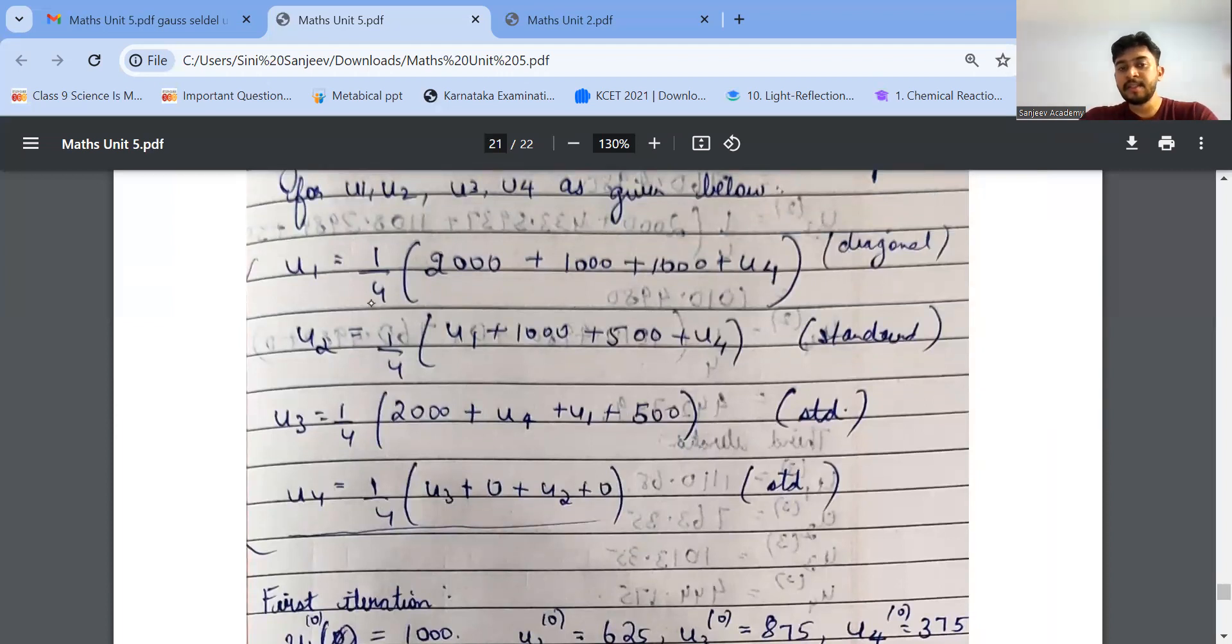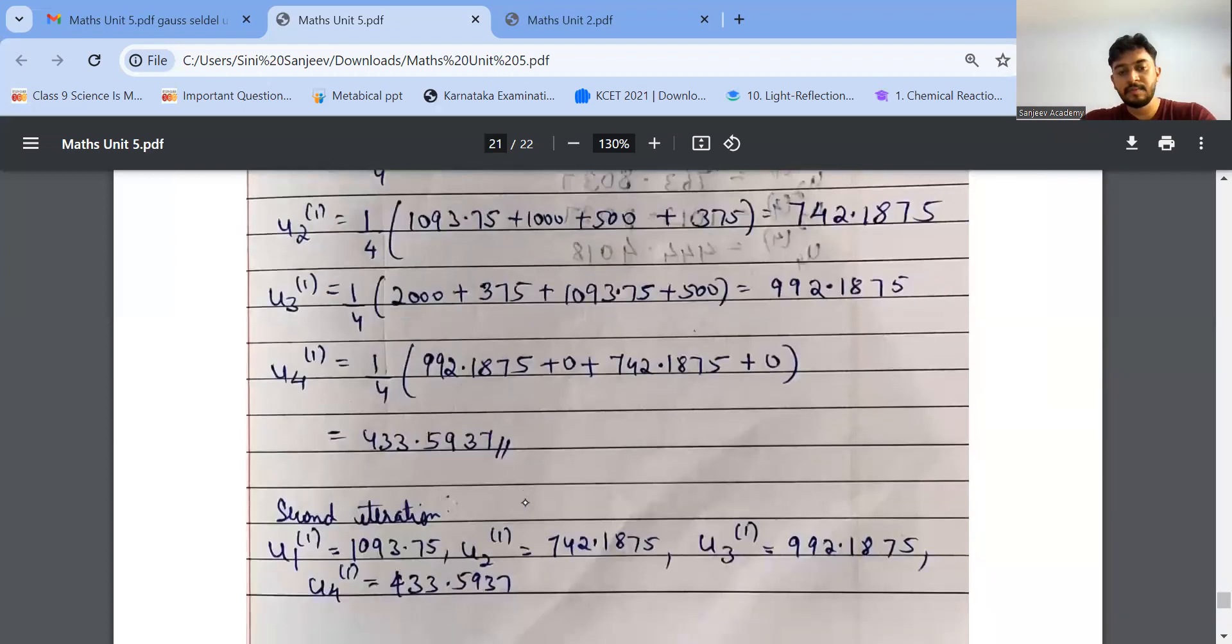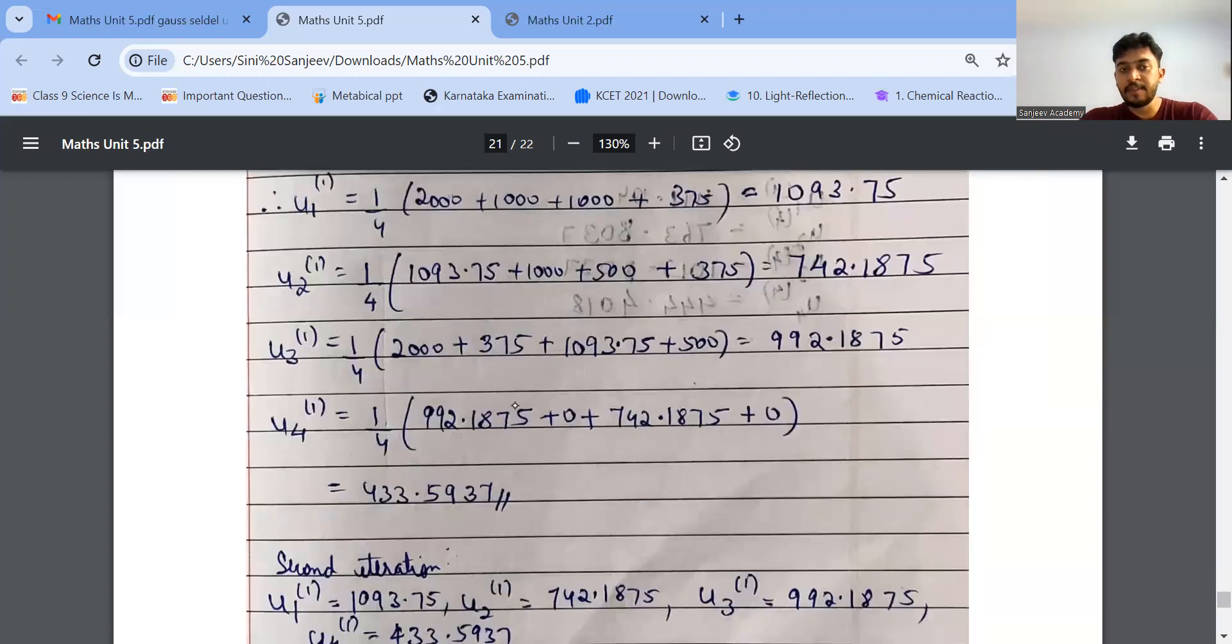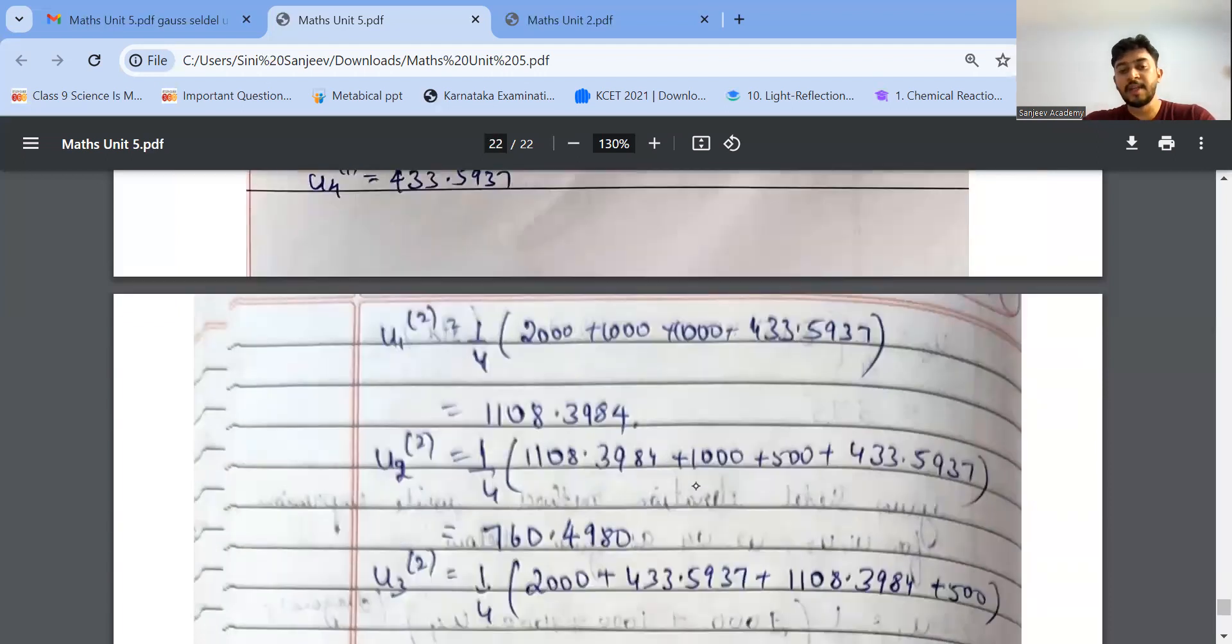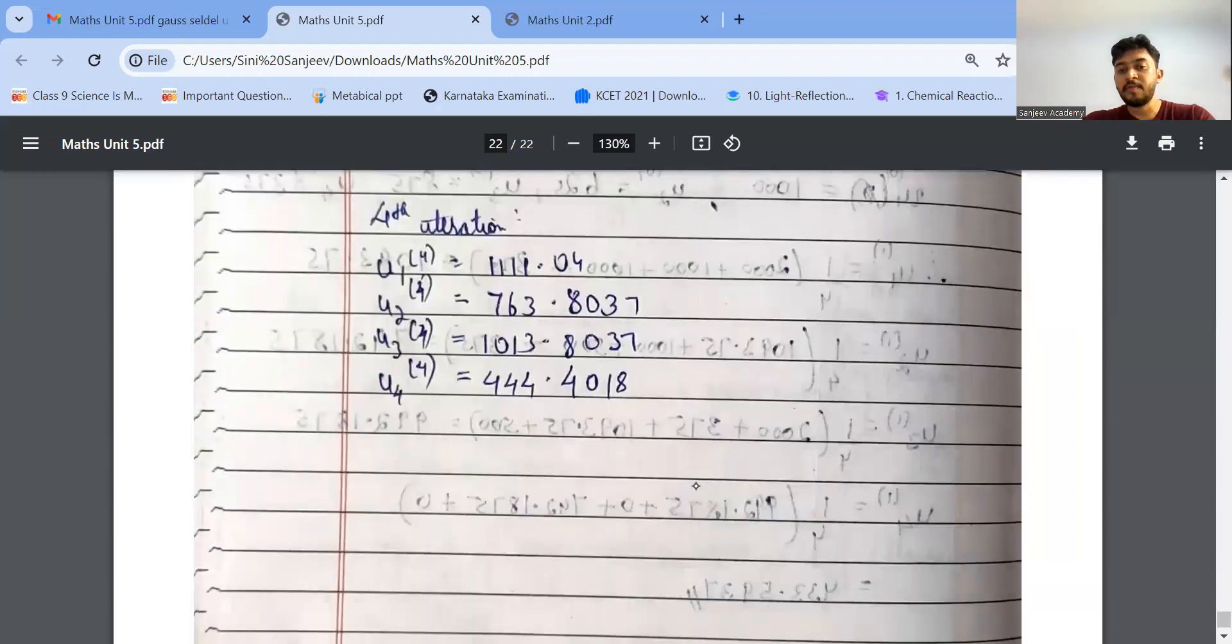Once you've got that thing, then this U1 value, new U1 value, you'll put it in U2. U4 value is same. Once you get U2, again here, U4 and U1 value is same. Just this above one, U1 and U2. This U3 value which we got new, that I'll substitute here. Second iteration, I'll be using the new U1 value, new U2 value, U3 value and U4 value in the above equation. So like that, we have to perform up to fourth iteration.